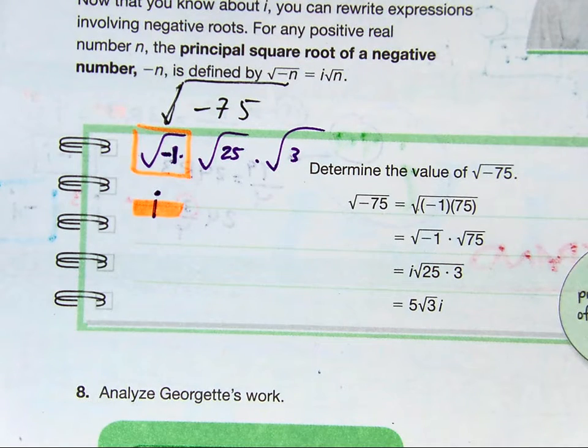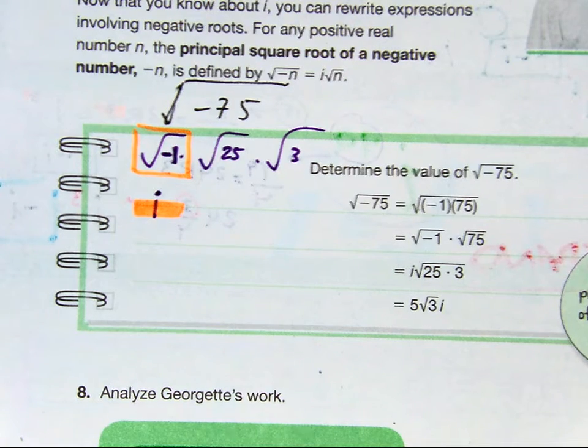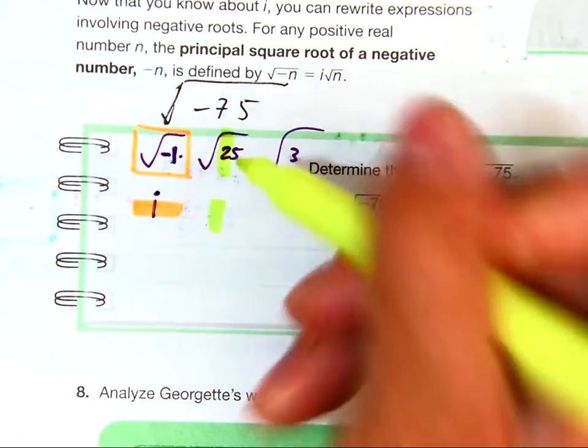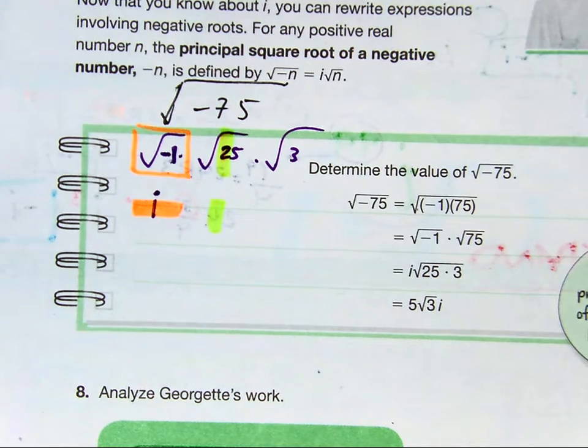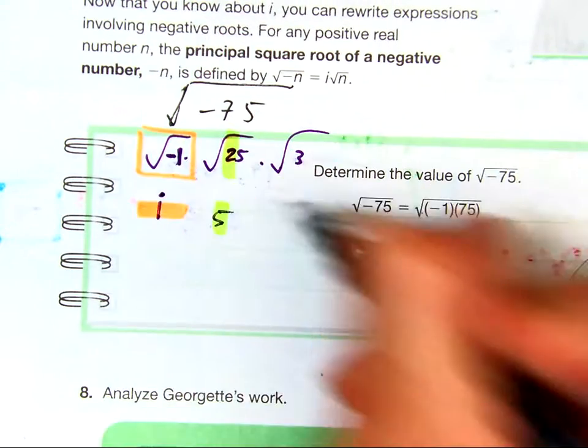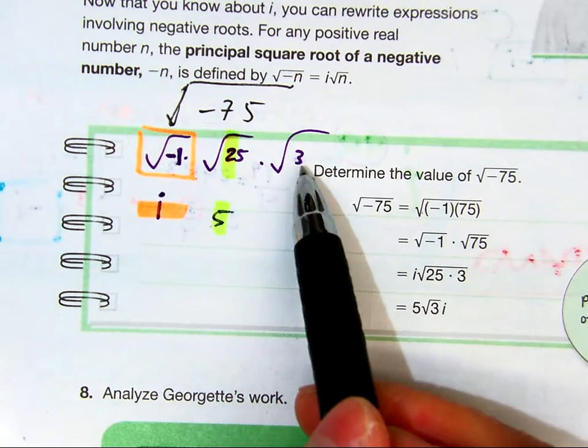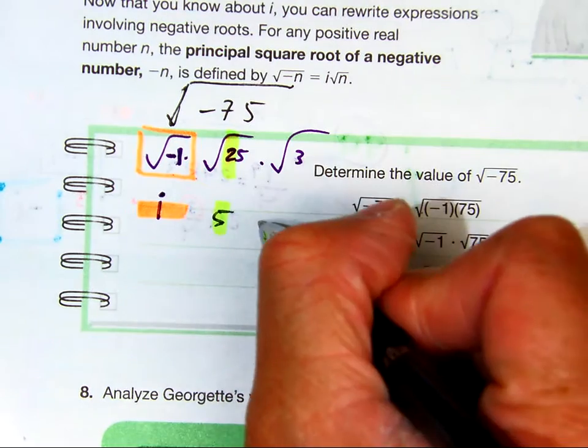Class, what is the square root of 25? The square root of 25 is 5. And there are no two identical numbers that multiply to be 3, so we'll just leave that.